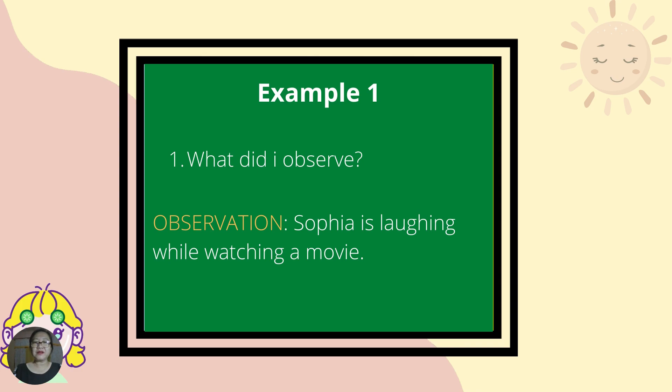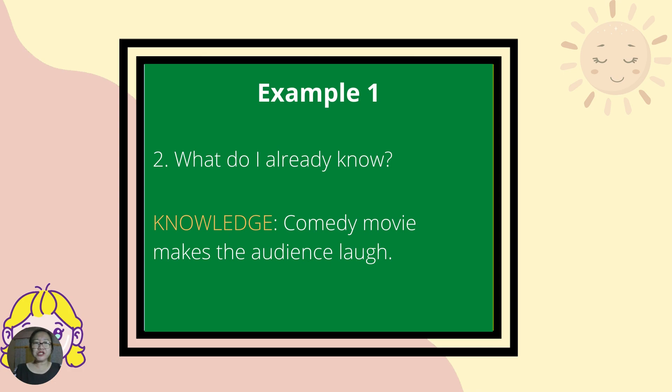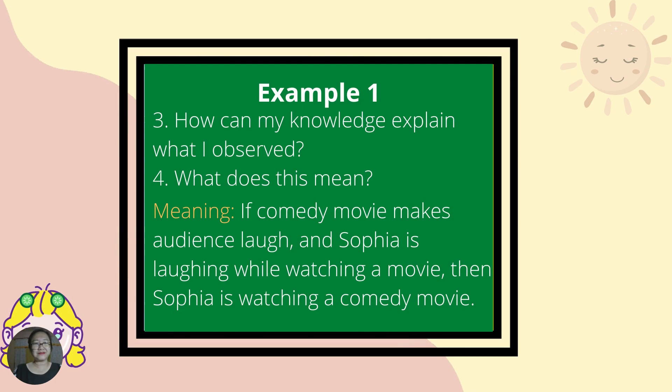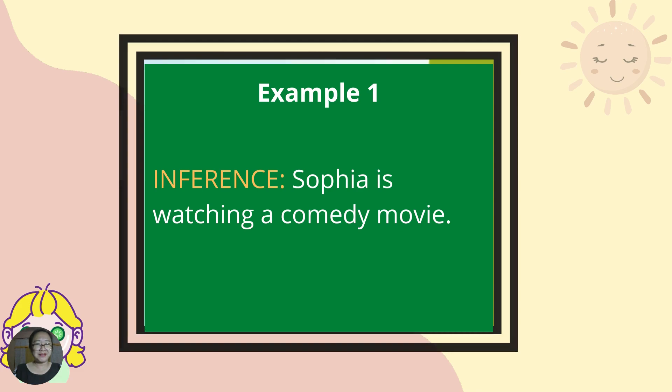Example. What did I observe? Sophia is laughing while watching a movie. What do I already know? Comedy movies make the audience laugh. How can my knowledge explain what I observe? If comedy movies make audiences laugh and Sophia is laughing while watching a movie, then Sophia is watching a comedy movie. So our inference based on our observation is: Sophia is watching a comedy movie.